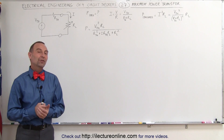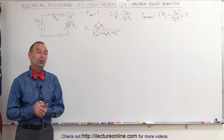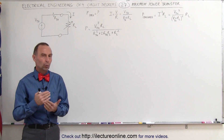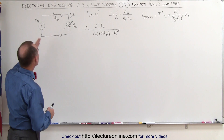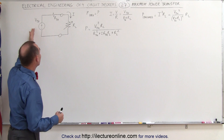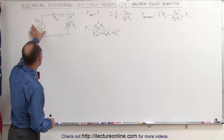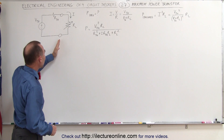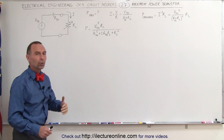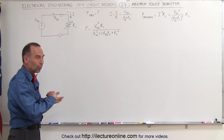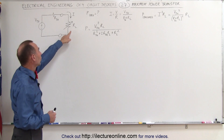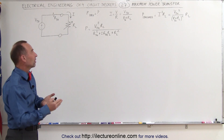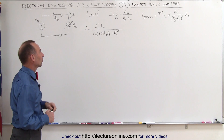Welcome to Electron Online. In this video, we're going to take a look at the maximum power transfer of a linear circuit to a load resistor. Here we have the equivalent Thevenin circuit with the Thevenin voltage and the Thevenin resistance of some linear circuit. We're going to attach to that some load resistor, and we're going to make that a variable resistor, so we can vary the resistance of the load resistor until we get the maximum power transfer.